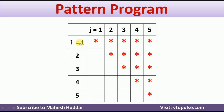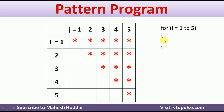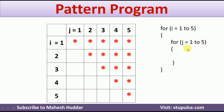Now, the possible values for i is 1 to 5, so we will go from i equal to 1 to 5. That is the first thing we need to understand. Now, for each possible value of i, the j will go from 1 to 5. But sometimes we will print star and sometimes we will print space. The values of j are 1 to 5. Now, the next question is: when to print star and when to print space? That is the question.